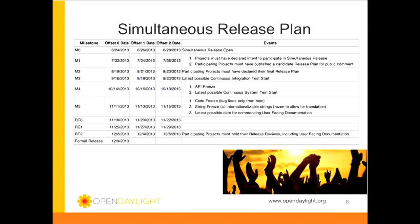We had this nice simultaneous release plan with milestones, release candidates, and all of that. We were supposed to have the formal release on December 9th — that was our target last year. And when we got there, we found out it didn't quite happen the way we wanted to. We did a little bit of learning. You can find all this stuff on wiki.opendaylight.org.